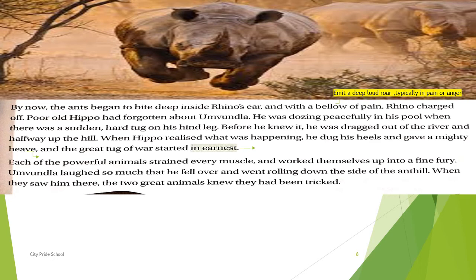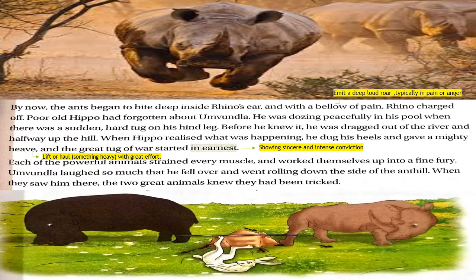A bellow is a deep loud roar, typically in pain or anger. To heave means to lift or pull something heavy with great effort — Rhino and Hippo both heaved equally from both sides. You can see in the picture: Hippo is tied to one side of the rope, Rhino to the other, with the ant hill in the middle. And there is Umundla, laughing and rolling happily, watching the two great animals be tricked by him.